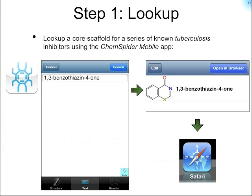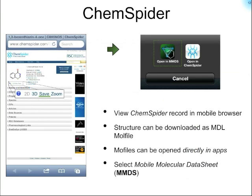The background for this workflow is that we've read a paper suggesting that benzothiazinone scaffolds are a good starting point for TB inhibitors. Based on this information, we fire up the ChemSpider mobile app, a free app that accesses the ChemSpider database, and type in the name of the fragment we're interested in. The app sends off a query to the ChemSpider API, which responds with a list of matching compounds. We can see the structure and name of the compound located and open it within the Safari mobile browser, which renders the ChemSpider page in an iPhone form factor.